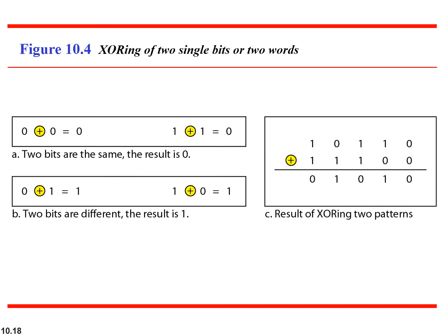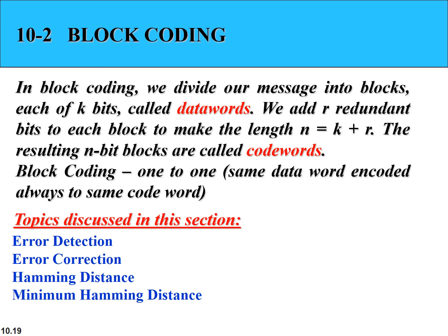The arithmetic used in these coding schemes is modulo-2 arithmetic, since we are dealing with bits. Modulo-2 means results are only 0 or 1, and XOR operations are used to generate redundant bits. In XOR: if two bits are the same, the result is 0; if two bits are different, the result is 1. This applies to both addition and subtraction in mod-2 arithmetic.